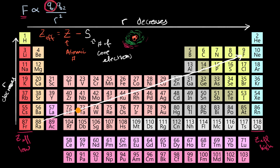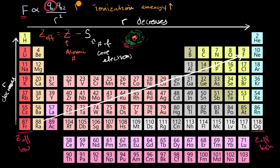Can we use this to think about other trends? What about ionization energy? The first ionization energy is the minimum energy required to remove the first electron from a neutral version of that element. Since it's the minimum energy, it's going to be one of the outermost valence electrons. Ionization energy will be high where Coulomb forces are high — which means a high effective charge and a low radius, both of which increase Coulomb forces.